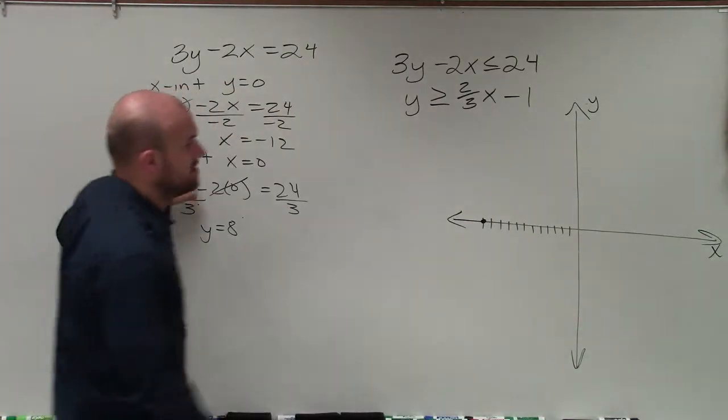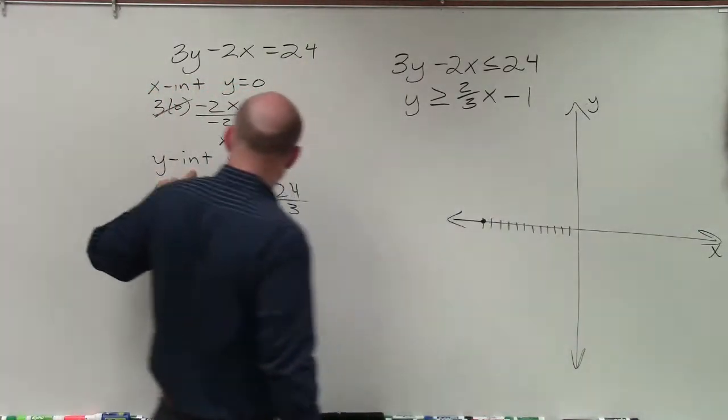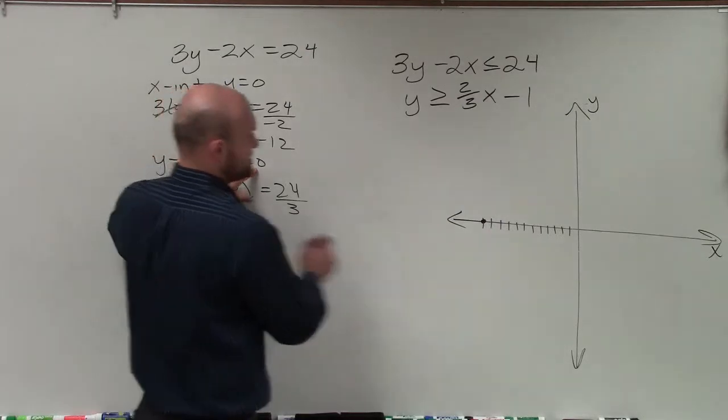Then the y-intercept is going to be the point where it crosses the y-axis. And that is when x equals 0, not going left or right, y is equal to 8.